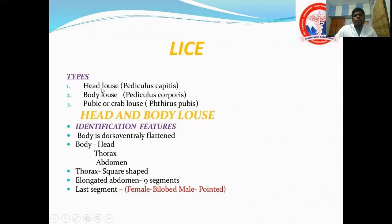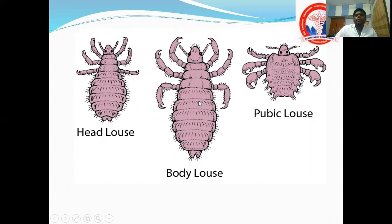We have three types of lice: head louse, body louse, and pubic or crab louse. Head and body louse have a forehead-shaped, elongated abdomen with nine segments. The last segment is bilobed in female and pointed in male. The body and head louse are elongated, while pubic louse is square-shaped with much bigger claws and looks like a crab — that is why it is called crab louse.